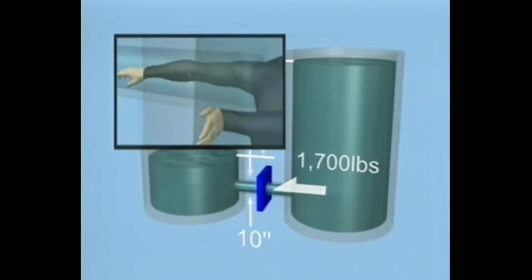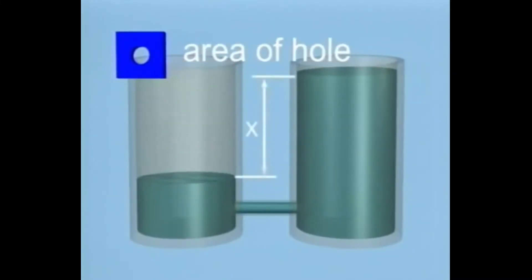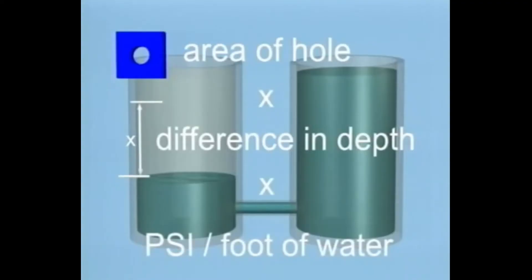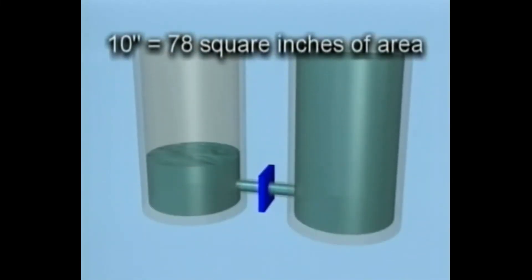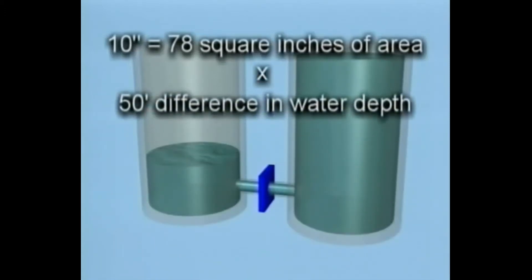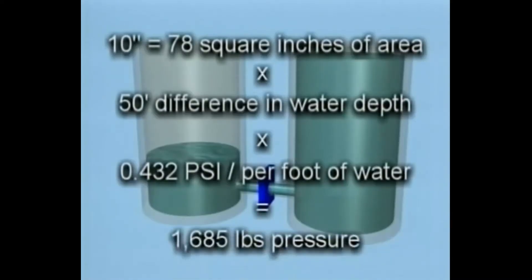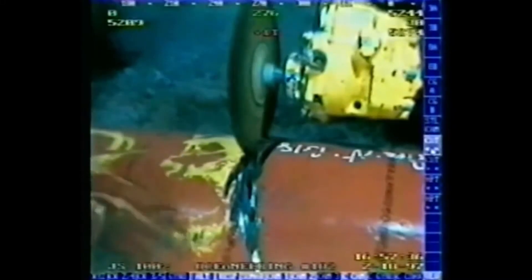The formula for calculating the force of water through a hole at a particular depth is: the area of the hole multiplied by the difference in water depth, multiplied by the PSI per foot of water depth. In the situation just described, a 10-inch hole equals 78 square inches, times 50 feet of water depth, times 0.432 PSI per foot of freshwater depth, equals 1,685 pounds of water pressure. If you are diving in saltwater, use 0.445 PSI in your formula instead.